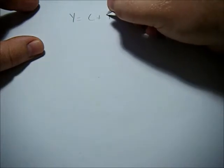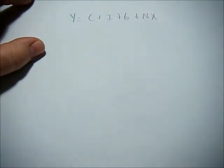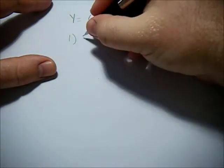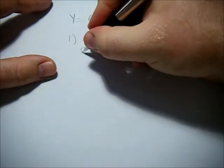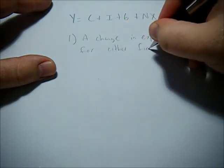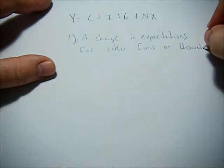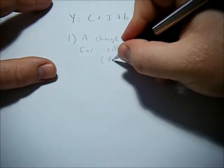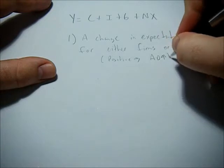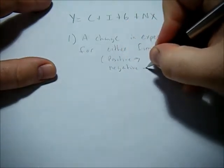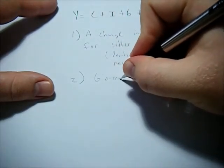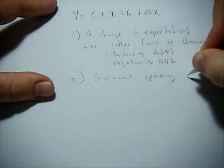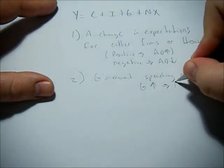Let's do a summary. Remember the components of aggregate demand: Y equals C plus I plus G plus net exports. Remember that, and the factors that change these can be lumped into a change in expectations for either firms or households. A positive change in expectation would mean aggregate demand increases. Negative, aggregate demand would decrease.